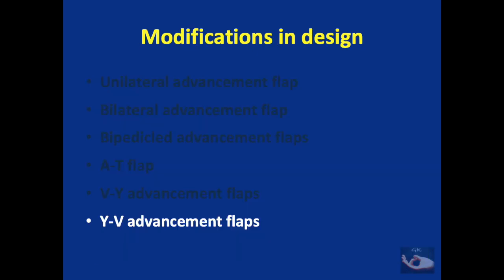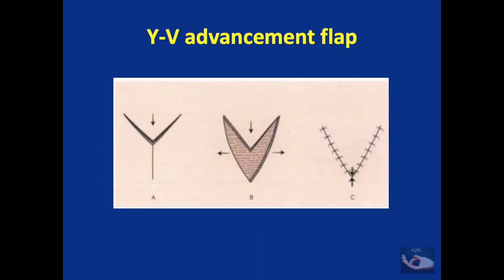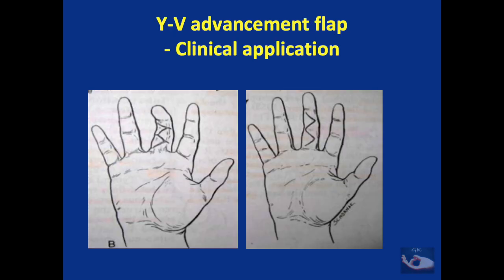In a similar way, Y to VY advancement flaps also can be done. A Y-shaped incision is made, the flap is raised, and it is closed in the form of a V. These flaps can be used specifically in two conditions in hand surgery: release of contractures, and making incisions for Dupuytren's contracture release. After the contracture release there is excess skin needed for closure, so if the incisions were marked as Y, they can be closed as a V.